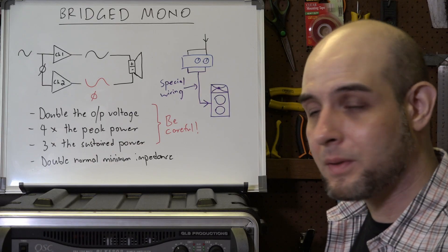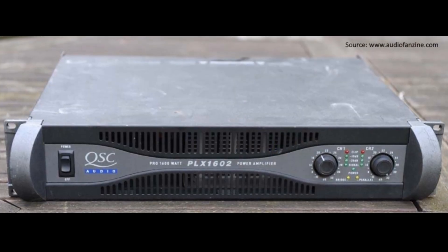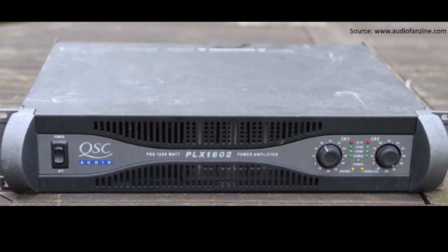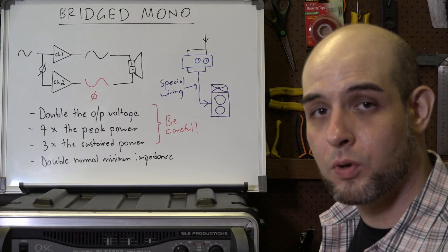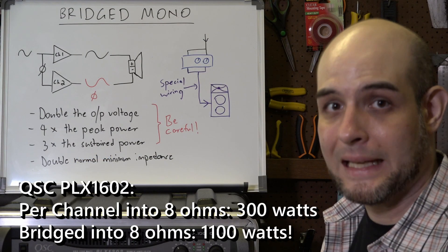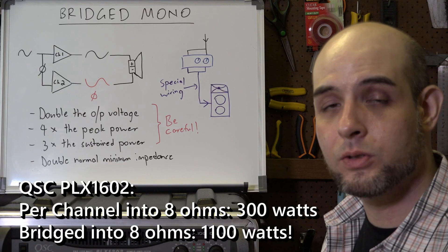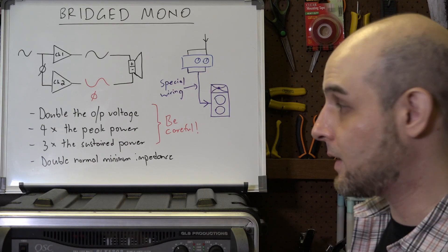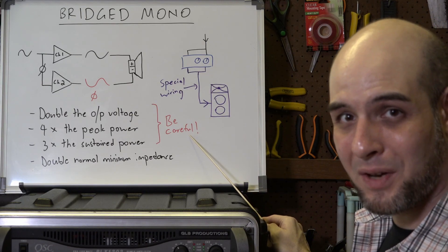As an example, the lower amplifier in this rack — the QSC PLX 1602 — is 300 watts per channel into eight ohms. When you bridge the amplifier into eight ohms, you get 1,100 watts. So you can drive thousands of watts into a single loudspeaker, which means you really want to be careful.